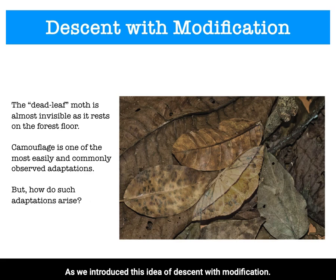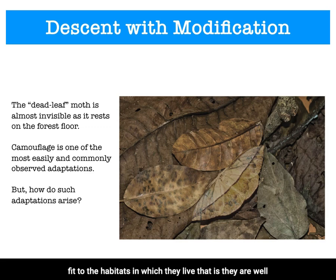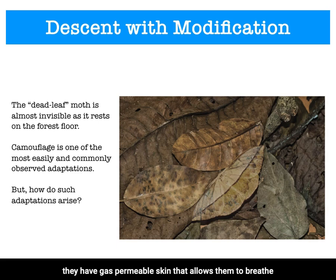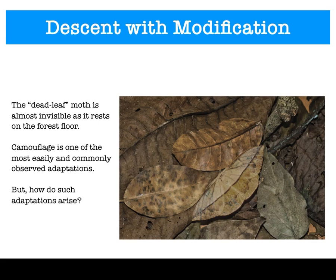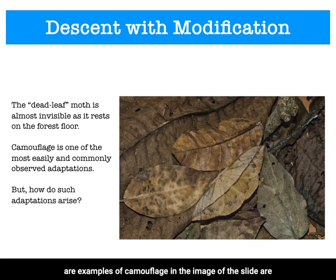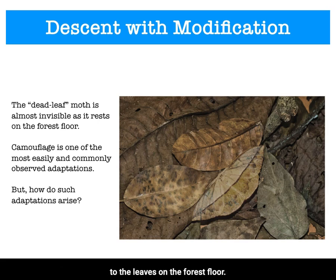As we introduce the idea of descent with modification, we want to understand that organisms exhibit a remarkable fit to the habitats in which they live — that is, they are well adapted to their world. For example, a frog is very good at living where frogs live: they have gas-permeable skin that allows them to breathe in or out of water, and they have strong legs and webbed feet which make them strong swimmers. Some of the most visually striking examples of adaptation are examples of camouflage. The wings of the dead leaf moth show an incredible match to the leaves on the forest floor. The question, though, is how do adaptations like this arise?